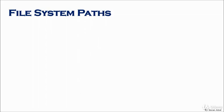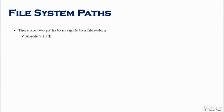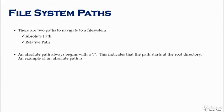Here we will talk about how we could navigate the file system through the absolute path or relative path. Basically, there are two paths to navigate a file system: the first one is the absolute path and the second one is the relative path. An absolute path always begins with a slash, which indicates that the path starts at the root directory.